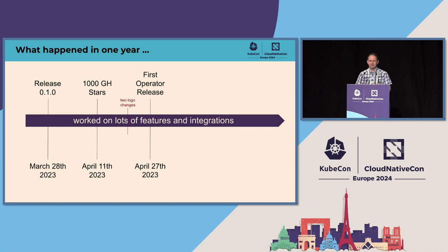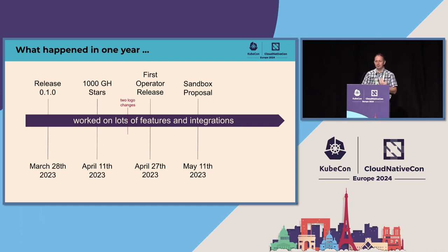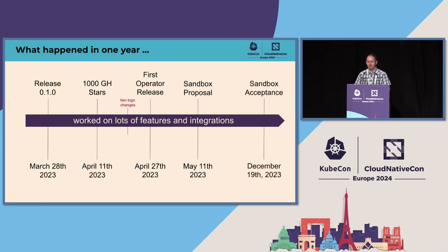After some time, we found out that the CLI was nice but we could automate things around it. So we started creating an operator to automate everything. In the meantime, you can run K8sGPT as an operator and it detects problems automatically when they occur. After about three months, we sent the sandbox proposal to the CNCF. We were a pretty young project, so it took a bit longer, and in December we got accepted into the sandbox. Since then, we've worked on lots of features and integrations, and the project grows day by day.